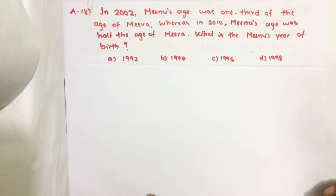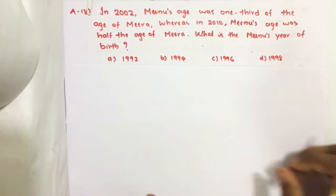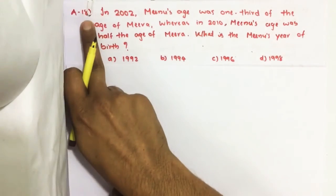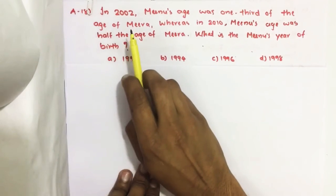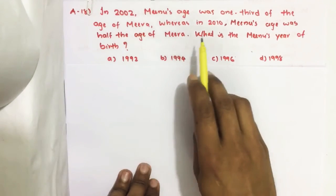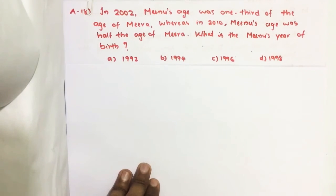Hello everyone, here I am going to solve 2019 CSAT question number 18 from question paper series A. In 2002, Minoo's age was one-third of the age of Mira.